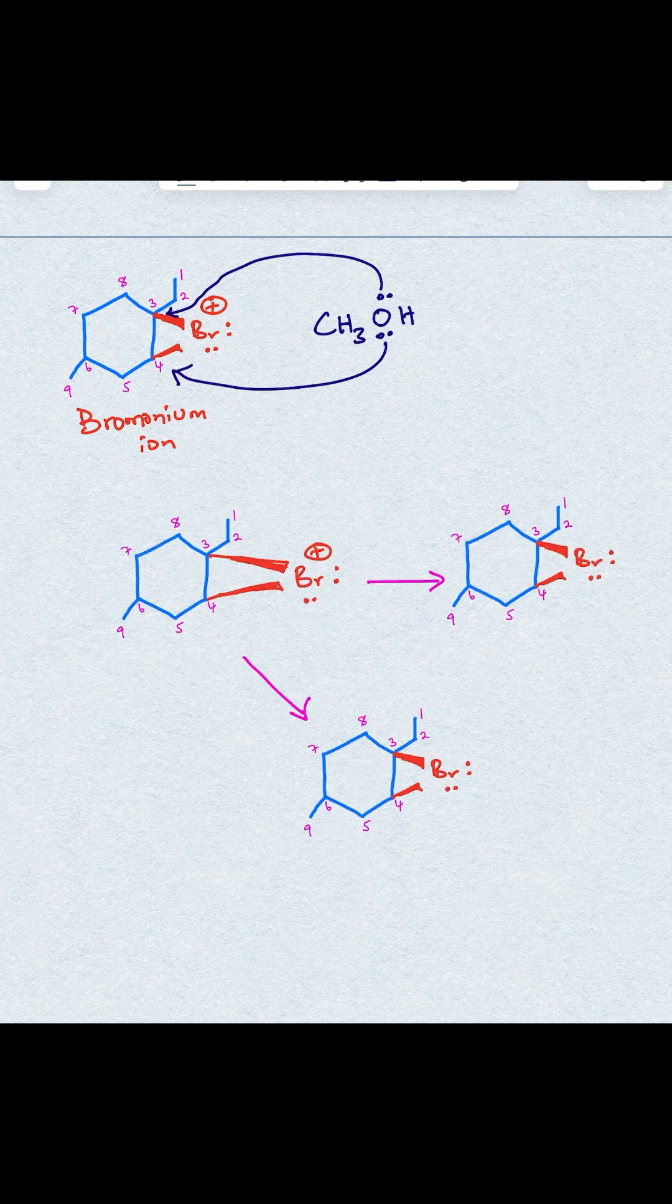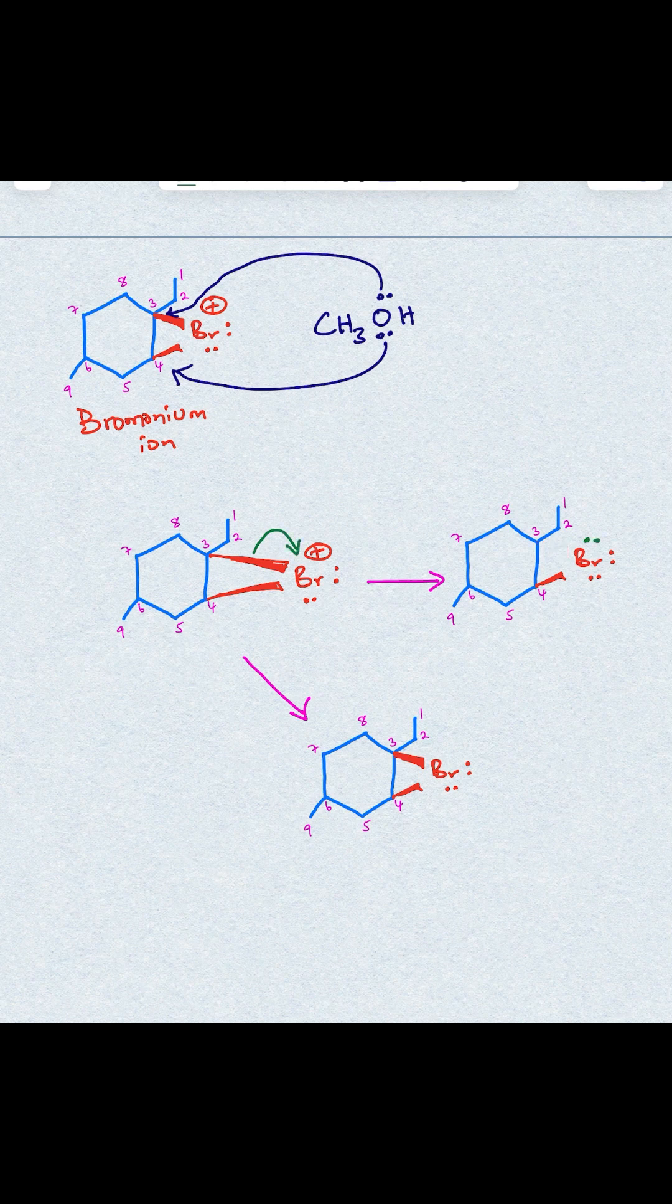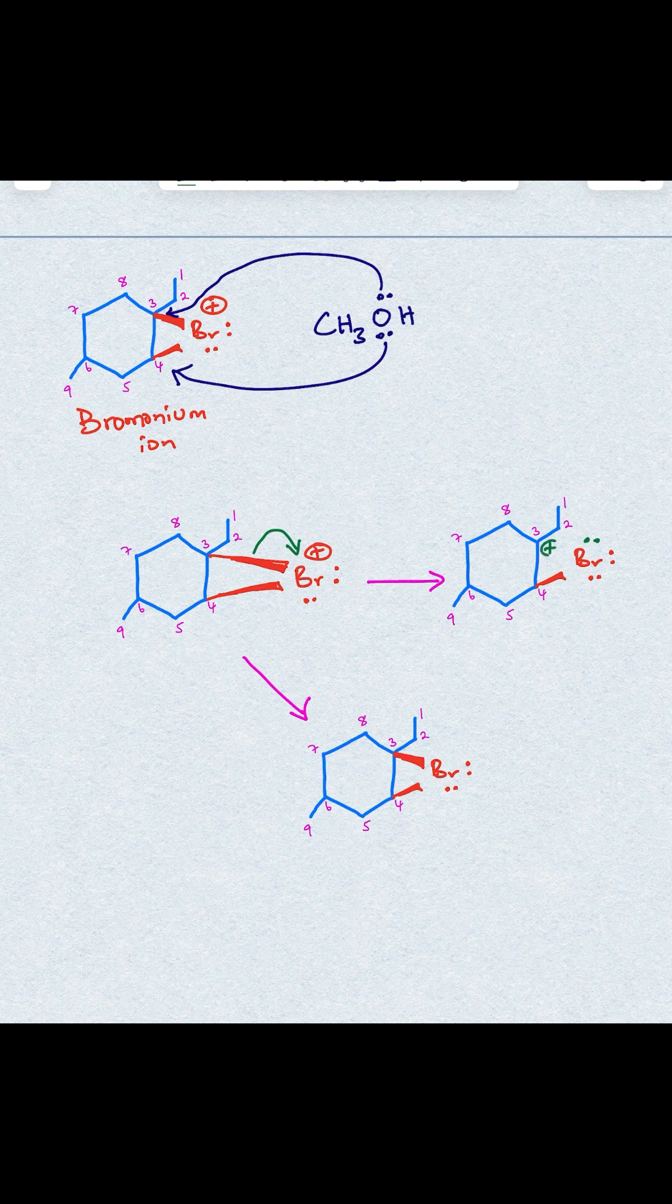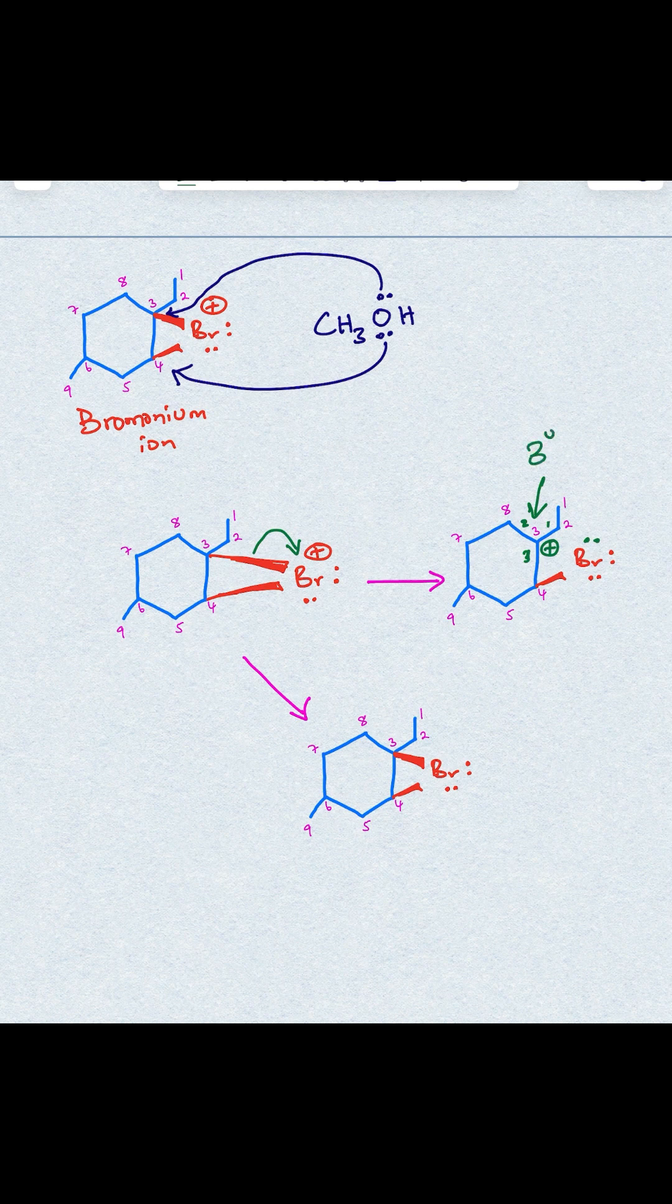Now if you focus on the bromonium ion intermediate, the ring can open from carbon number 3, so that means those electrons will flow to bromine, with bromine at that position, but now that carbon number 3 will be positively charged. And if you look at that carbon number 3, it has 1, 2, and 3, so that position looks like a tertiary carbocation.